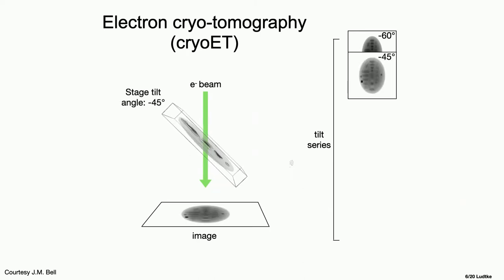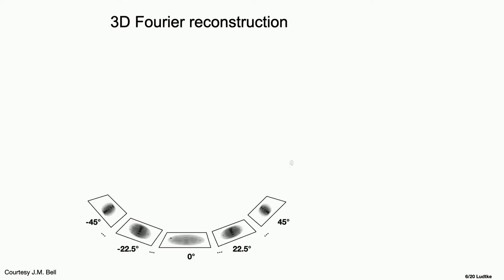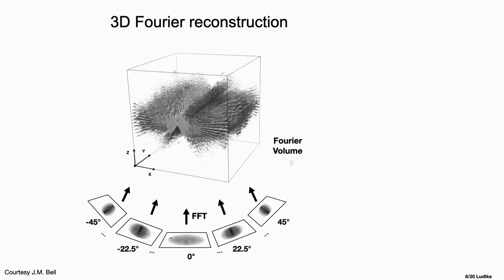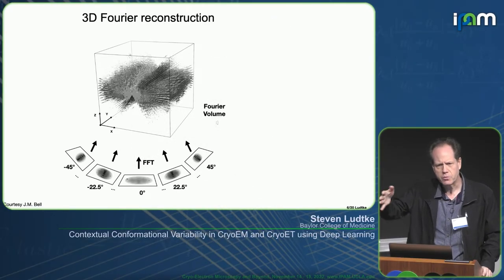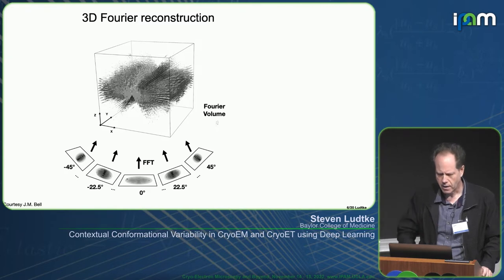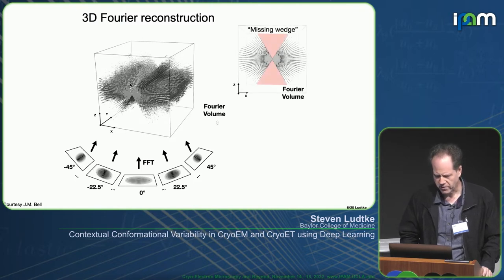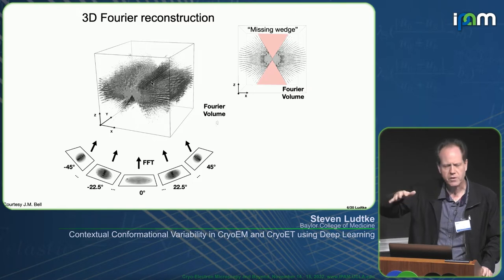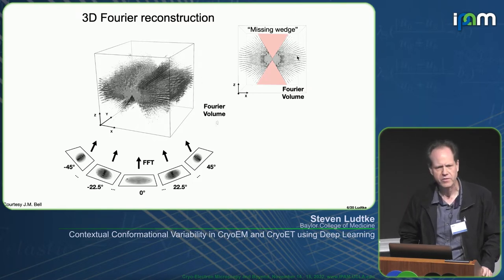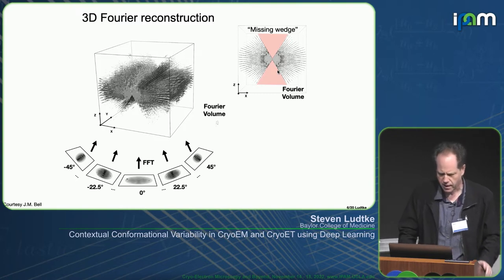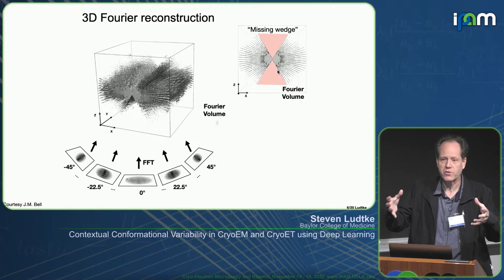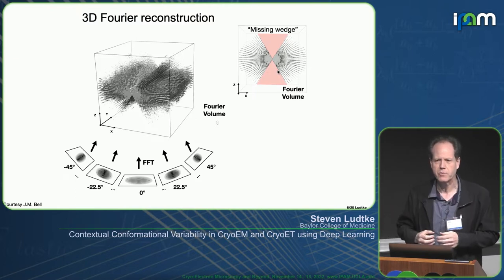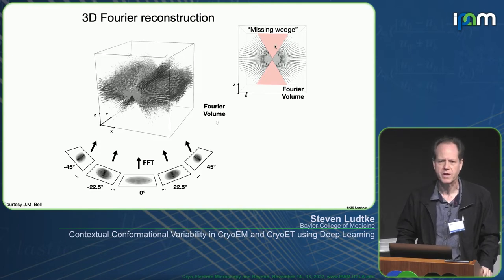You put the specimen in the microscope, tilt it to different angles, then reconstruct by back-projecting into Fourier space. Since the specimen is flat, we can't rotate it 360 degrees, so while it's three-dimensional data, it has poorer information along the z-axis because of this missing wedge. Since the tilts are taken in finite steps, there are also gaps between slices in Fourier space — we don't have complete information. And since it's a cell, we can't average the whole cell the way single-particle analysis does, so there's nothing we can do to fill in this missing information experimentally.